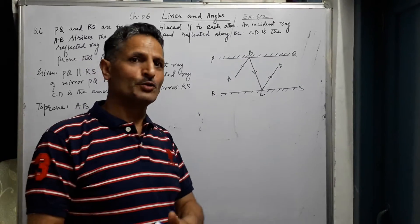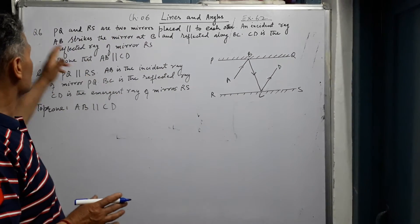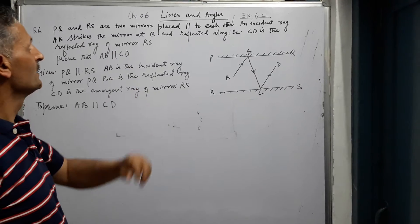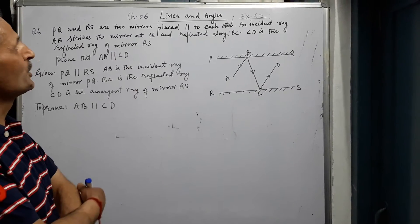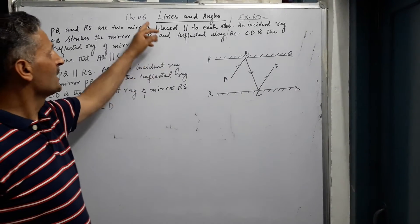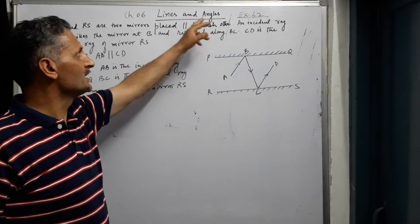Good morning children. Today we will do question number 6 of exercise 6.2. The chapter is again chapter 6: Lines and Angles.